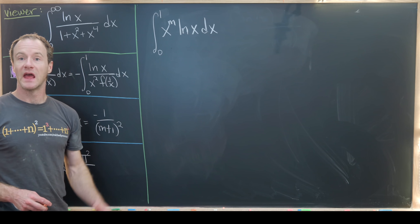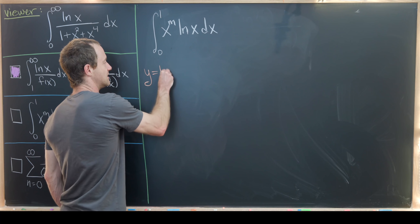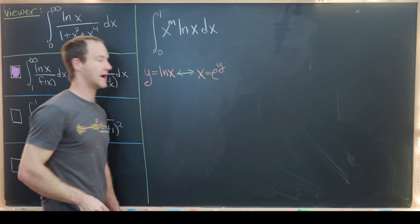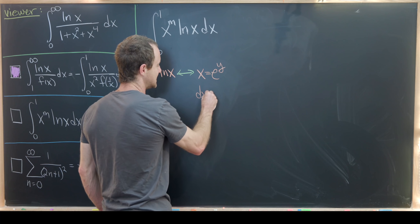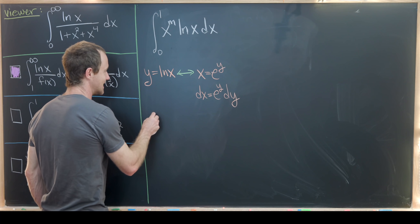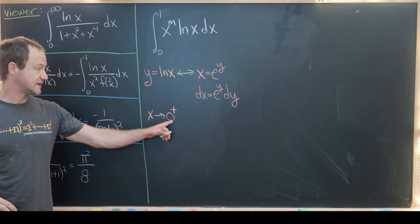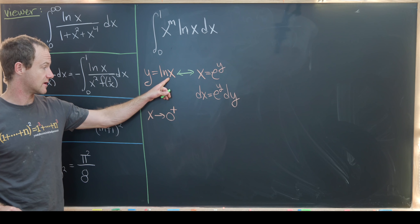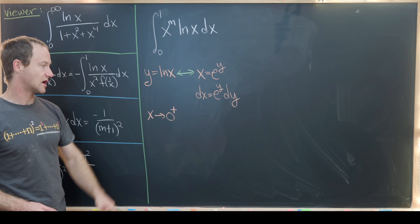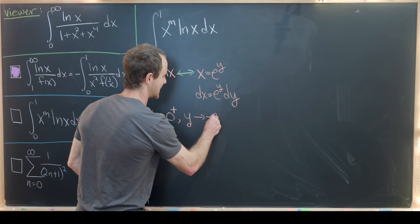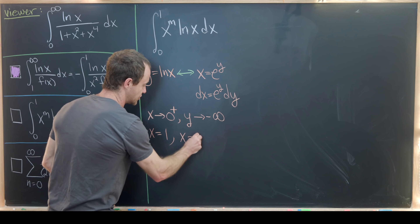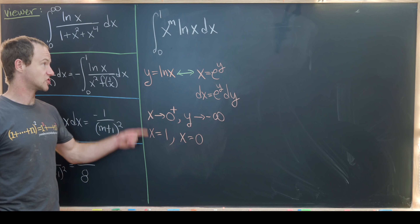We take y to be the natural log of x, which means x equals e to the y, so dx equals e to the y dy. For the bounds: as x approaches 0 from above, natural log of x approaches minus infinity, so y approaches minus infinity. And if x equals 1, y equals the natural log of 1, which is 0.